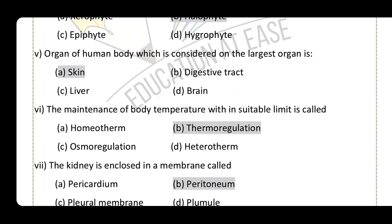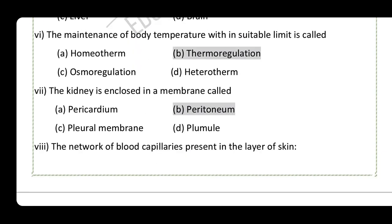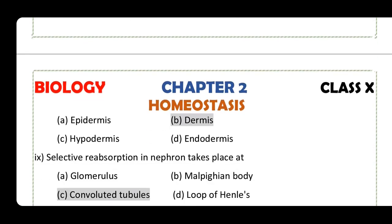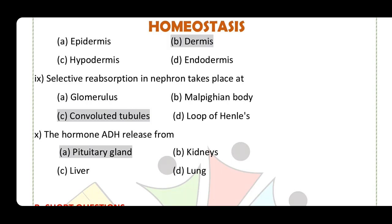The largest organ of the human body is considered to be the skin. The maintenance of body temperature within suitable limits is called thermoregulation. The kidney is enclosed in a membrane called the peritoneum membrane. The network of blood capillaries present in the skin layer is in the dermis. Selective reabsorption in the nephron takes place at both proximal and distal convoluted tubules. The hormone ADH is released from the pituitary gland.